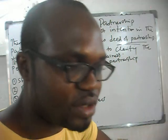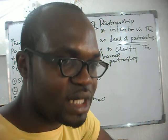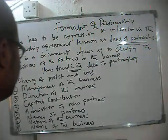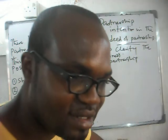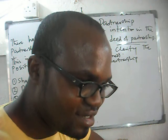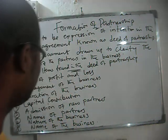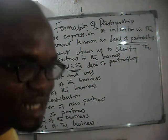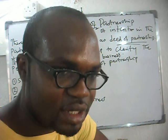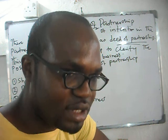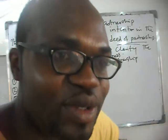Admission of new partners: are we going to take more new partners or leave it as we are? If we are going to take more partners, how do we go about it? That has to be in the deed of partnership. Names of the partners — Engineer Austin, Engineer Toby, and Mrs. Judith — must be stated. Nature of the business: are we into construction, service rendering, or teaching? That has to be there.